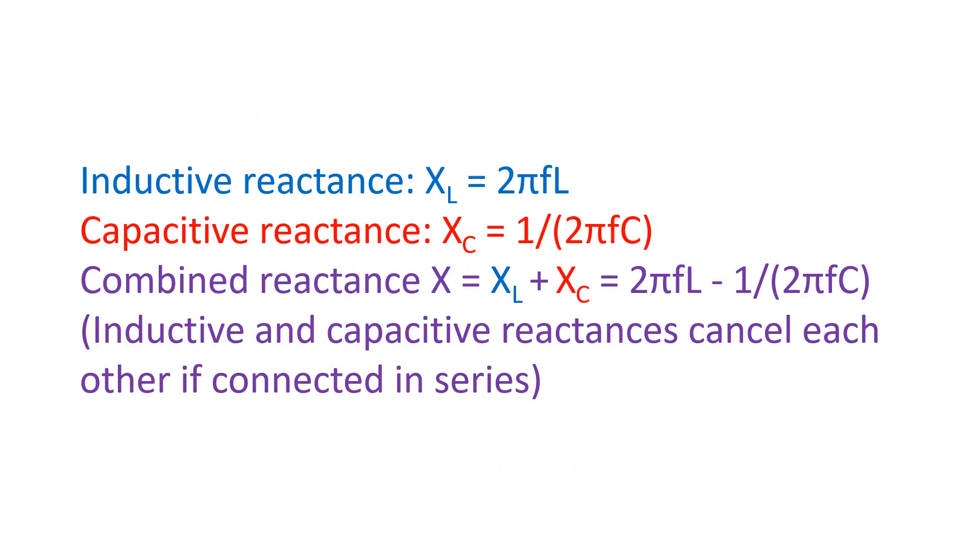Reactance is the property of inductors and capacitors to reduce the flow of alternating current in a circuit, represented by the letter X. The alternating current could be of line supply, audio frequency or radio frequency. Reactance does not apply to direct current.